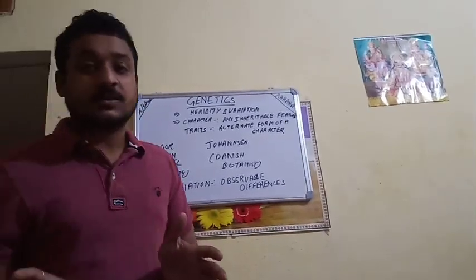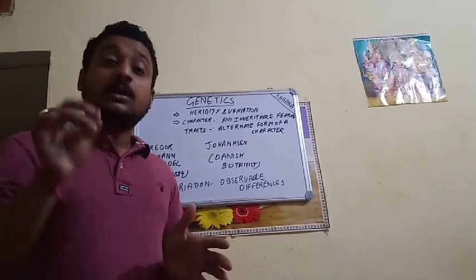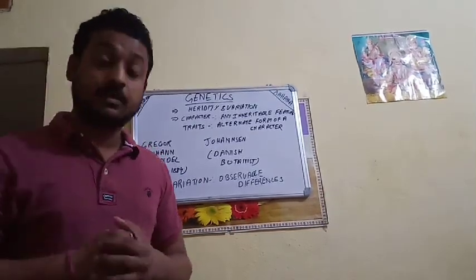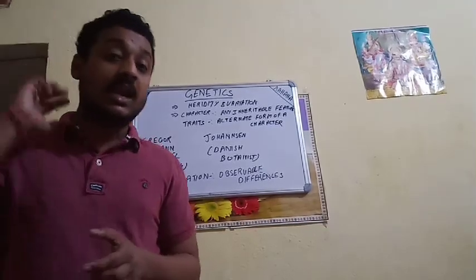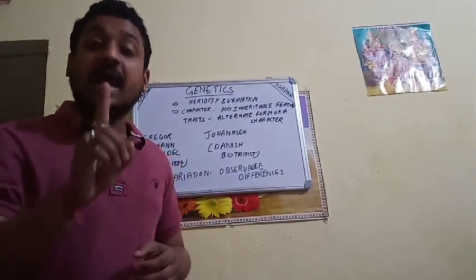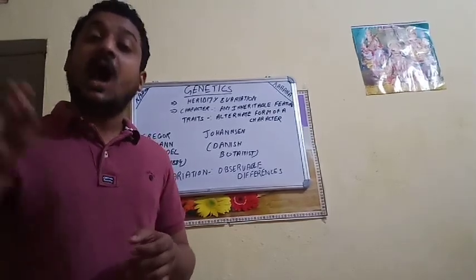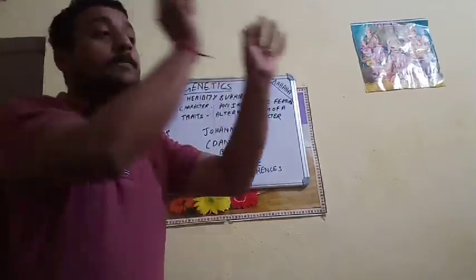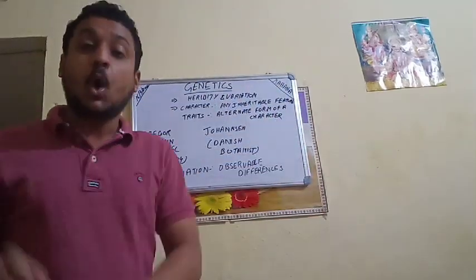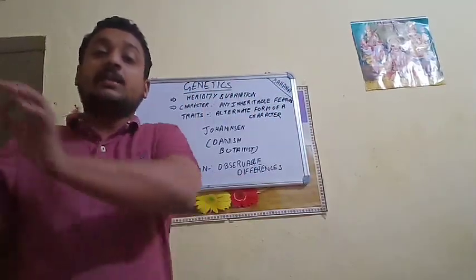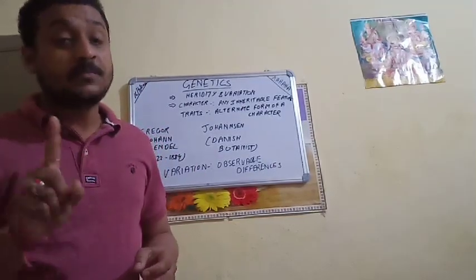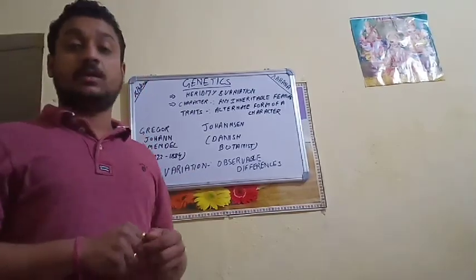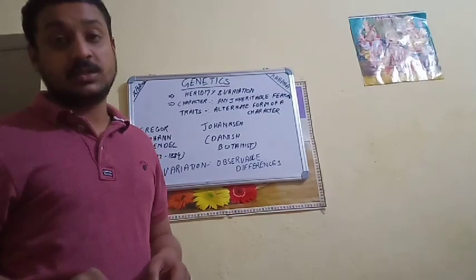The son may have hair like the mother and eyes like the father. The daughter may have eyes like the mother and hair like the father. The inheritable features of both parents are present in both children. We cannot say the son is completely looking like the father or the daughter is completely looking like the mother. The character of both parents is present in both children.